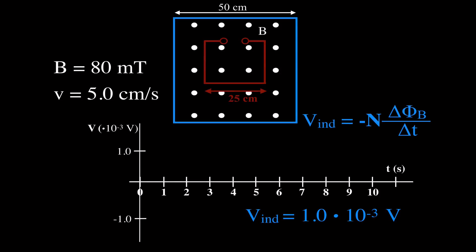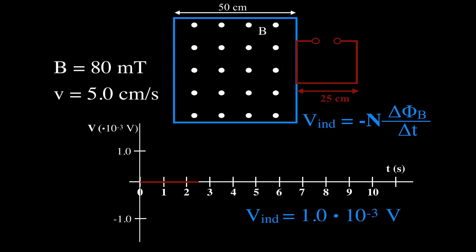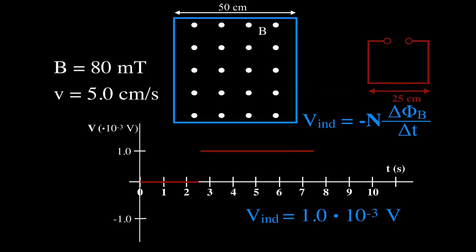Now we graph the induced voltage. From 0 to 2.5 seconds there is no induced voltage because the flux is not changing. From 2.5 to 7.5 seconds the flux is changing, so there is a constant induced voltage of 1.0 times 10 to the minus 3 volts during those 5 seconds. After 7.5 seconds, the coil is fully outside the field, the magnetic flux is still zero, it's not changing, and therefore there is no induced voltage.